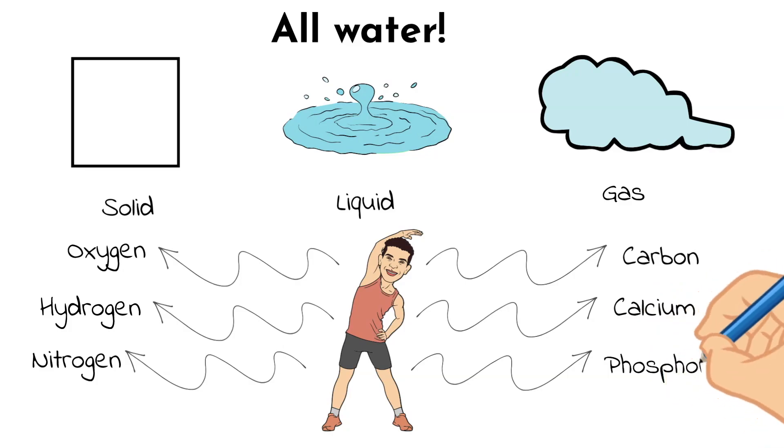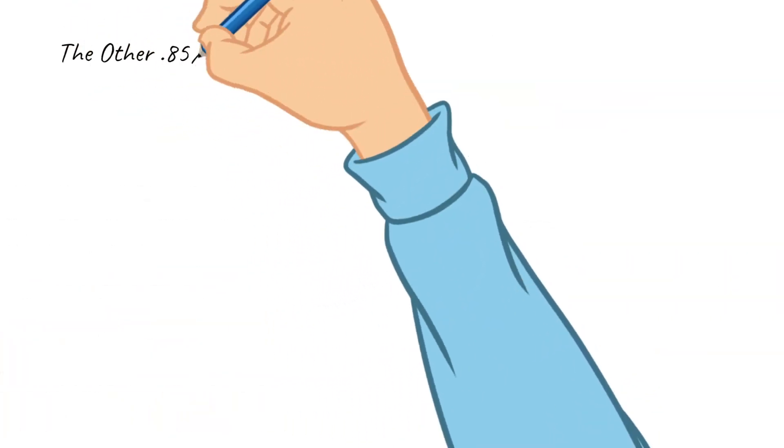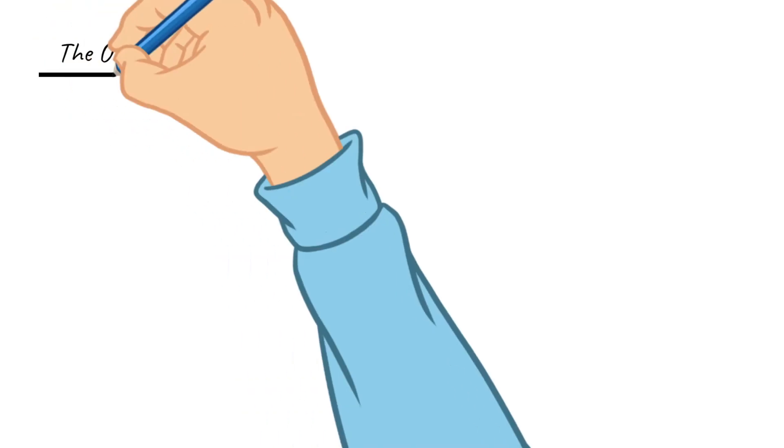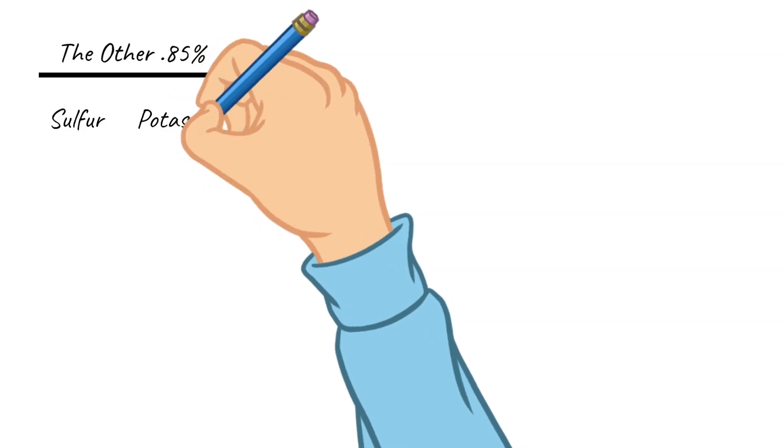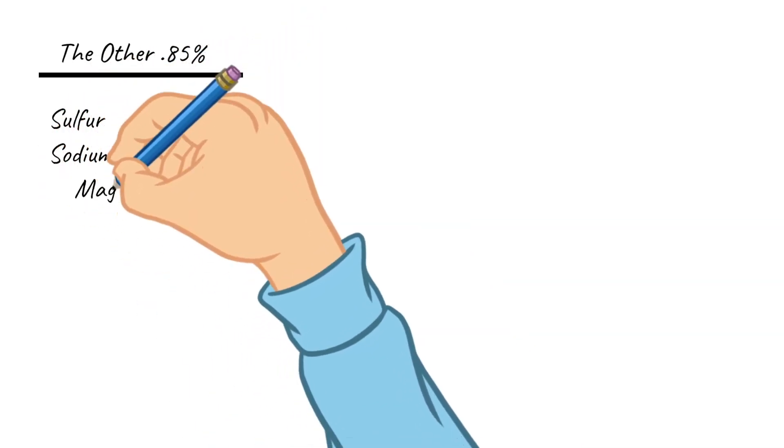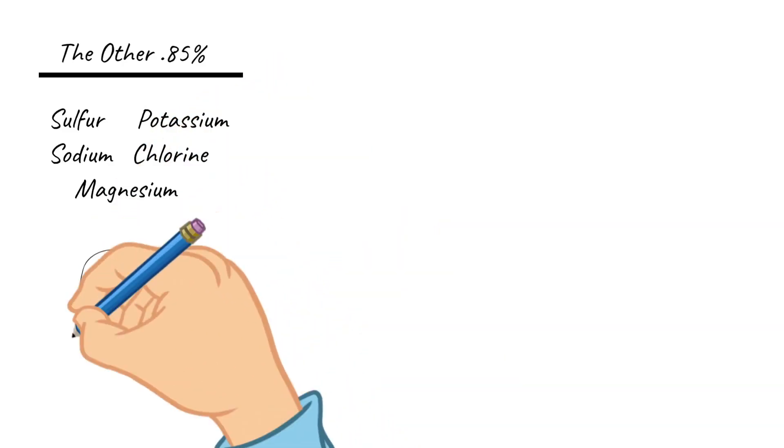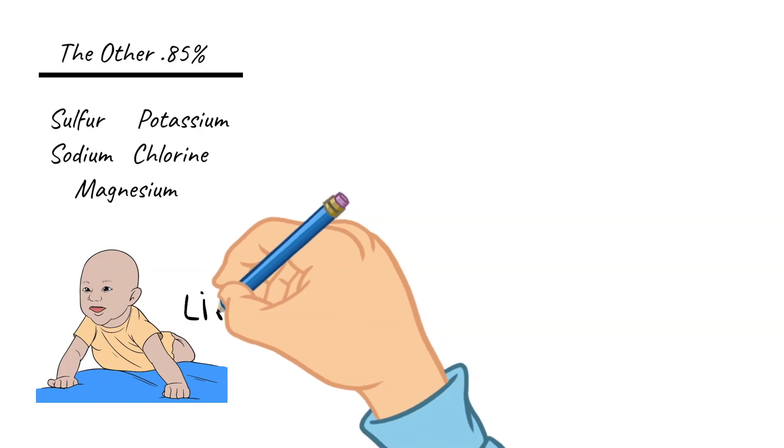Another five elements make up about 0.85% of the remaining mass, and they include sulfur, potassium, sodium, chlorine, and magnesium, but they appear in very small amounts in our body. All 11 of these elements though are necessary for life.